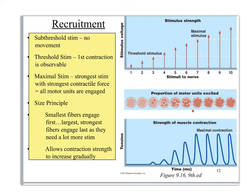The third panel measures force over time. With two cells engaged you get a little force; more cells means more force — more cells, more force, more cells, more force — until maximum, where every motor unit is engaged and the signal cannot be made any stronger.